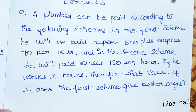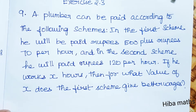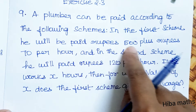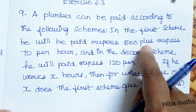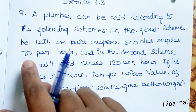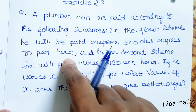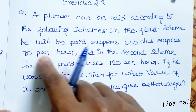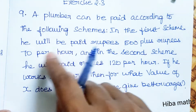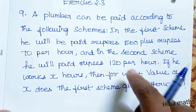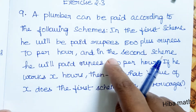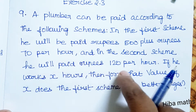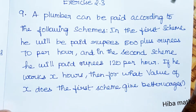The plumber will be paid by two schemes. He will be paid 500 basic plus 70 per hour in the first scheme. In the second scheme he will be paid rupees 120 per hour.